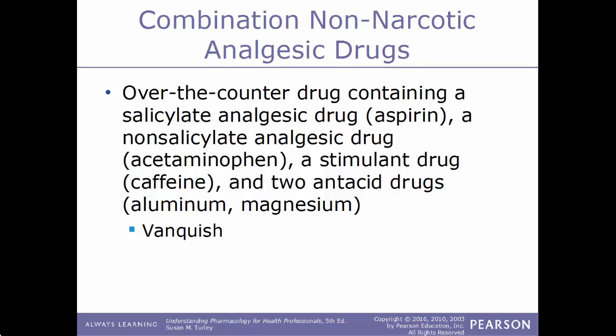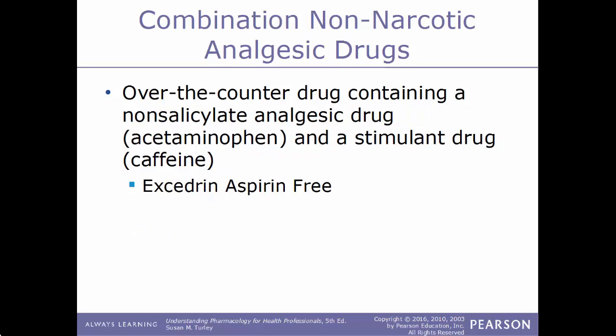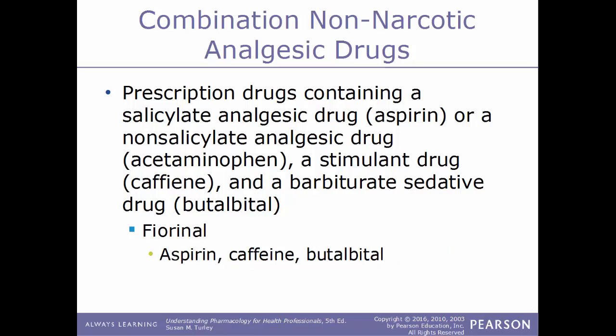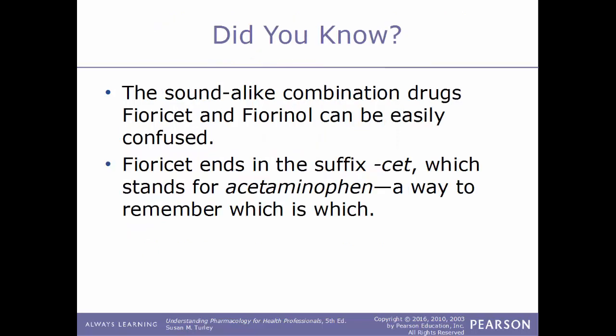Another combination includes a salicylate drug, a non-salicylate drug, caffeine, and antacids aluminum and magnesium — an example is the drug Vanquish. A combination of acetaminophen plus caffeine is Excedrin Aspirin-Free. Prescription combinations include a salicylate or non-salicylate analgesic drug plus caffeine and a barbiturate sedative drug butalbital. An example is Fioricet, which is a combination of acetaminophen, caffeine, and butalbital. Another example is Fiorinal, which combines aspirin, caffeine, and butalbital. A way to keep these straight: Fioricet has the suffix 'cet,' which stands for acetaminophen, one of its primary components.